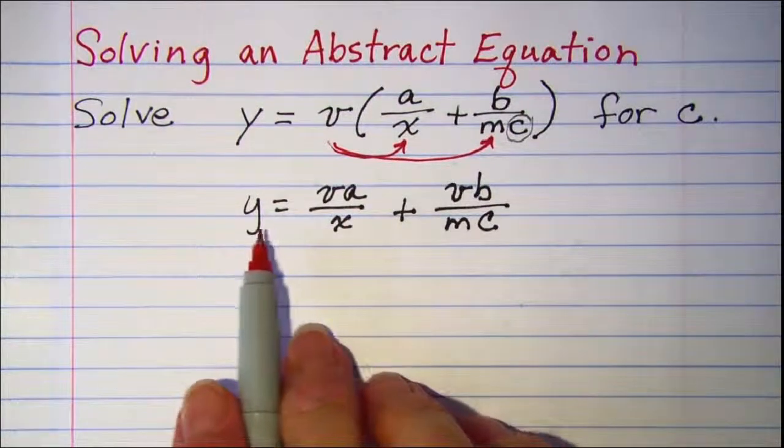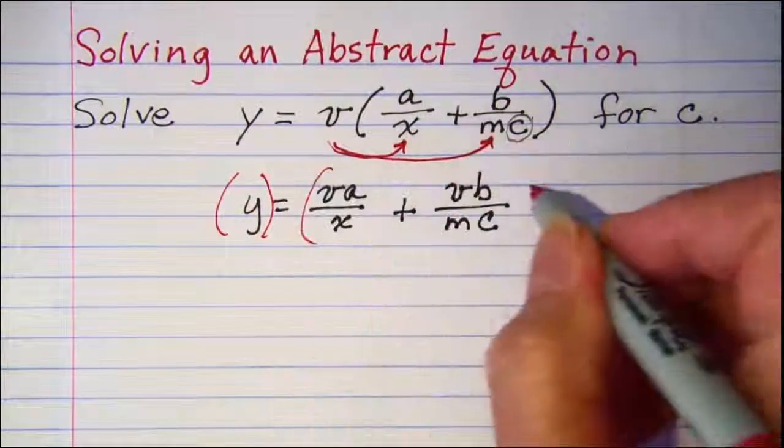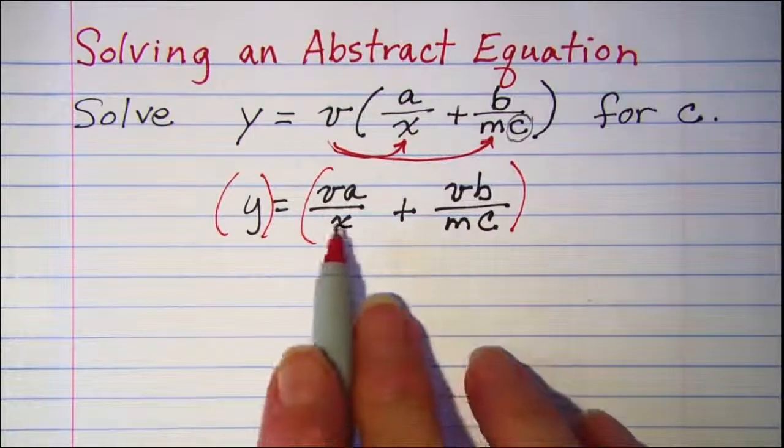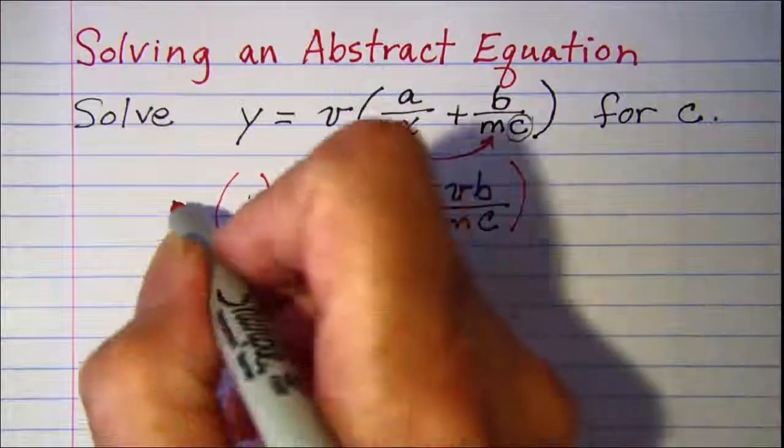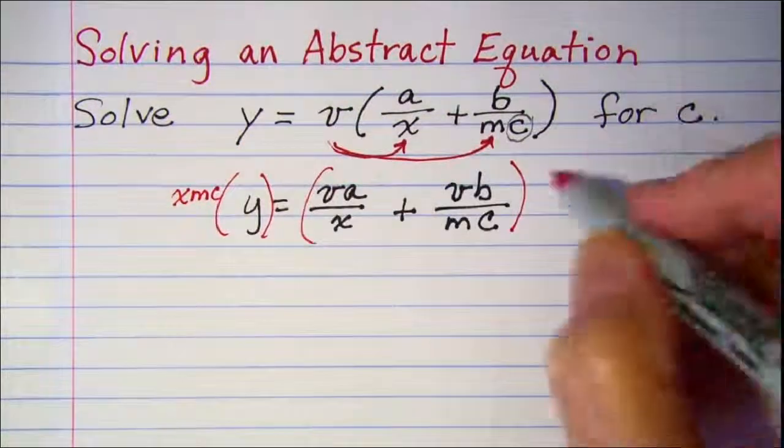Now I'm going to multiply both sides of the equation by a product which will remove the denominators. I need to remove x, m, and c, so I'll multiply both sides by the product xmc.